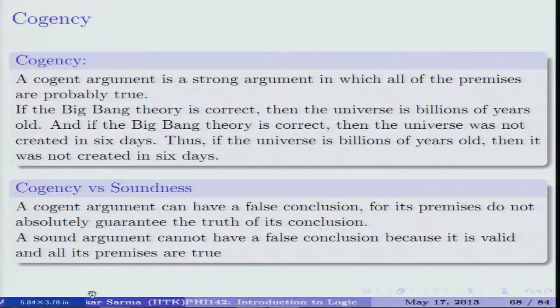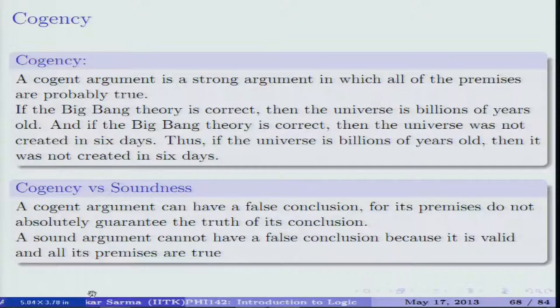Once the inductive argument is strong enough, we add the extra feature of cogency — just as in the case of sound arguments, where a valid argument is not just enough and must also be sound. A cogent argument is a strong argument in which all the premises happen to be probably true. Probably true means it is based on facts of experience, scientific facts, or historical facts that make the statement probably true.